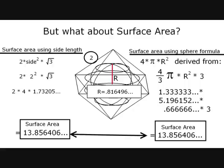But what about surface area? The sphere's surface area formula is 4 times pi times r squared, which is a shortened version of 4 thirds pi times r squared times 3, where the 3's cancel out. On the left you'll see the formula for surface area of an octahedron using side length, being 2 times the side length squared times the square root of 3. If you plug the side length into the formula and follow the breakdown I did, you'll see the surface area calculates to be 13.856.